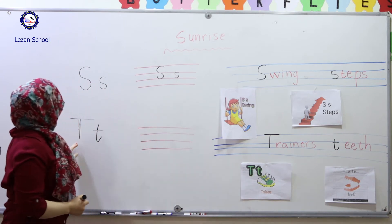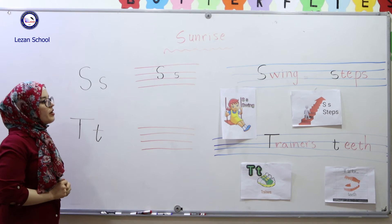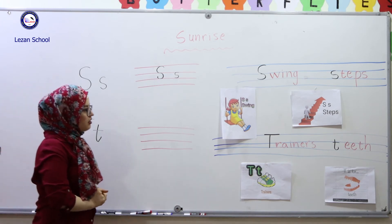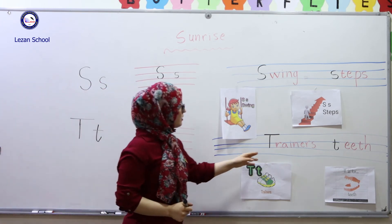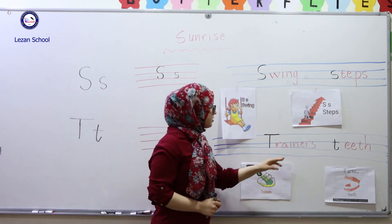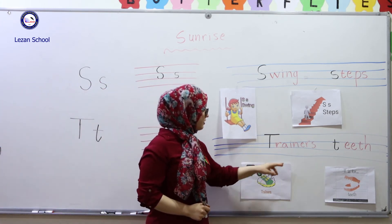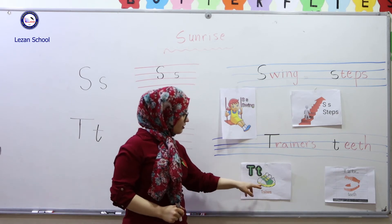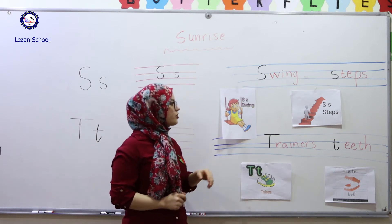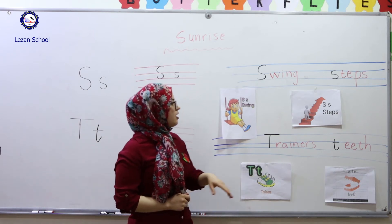Let's go to capital T and small T. We have an example — just like capital T: trainers. T, t, trainers. You see? Trainers.